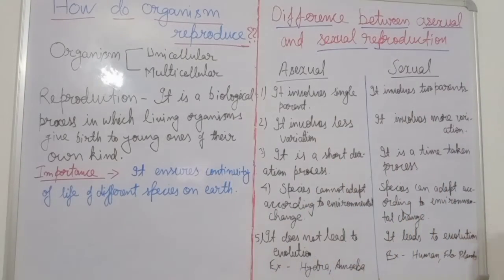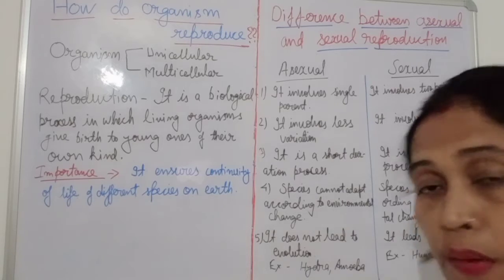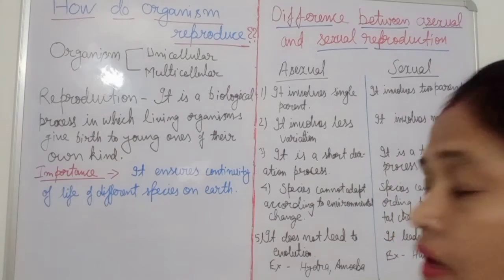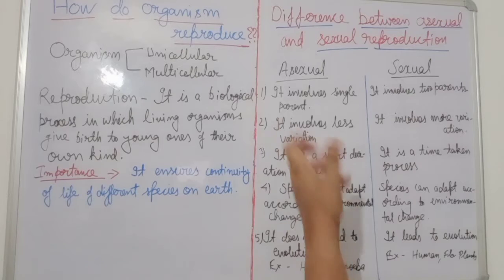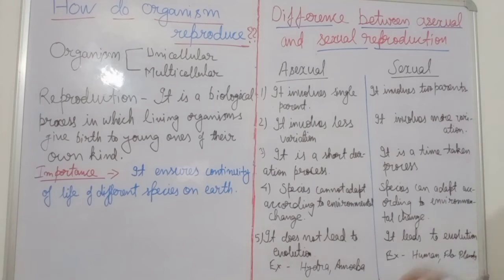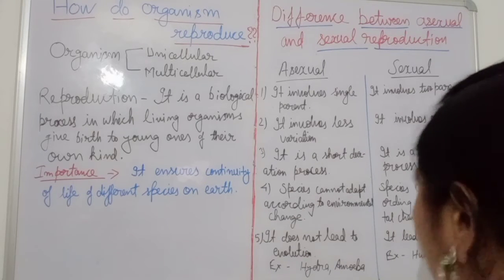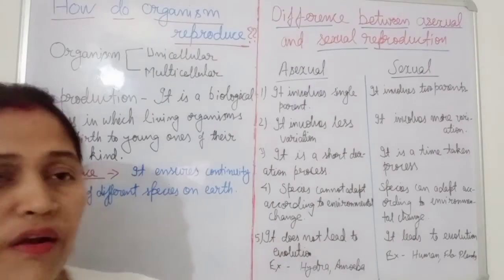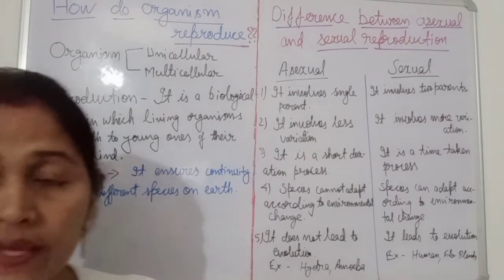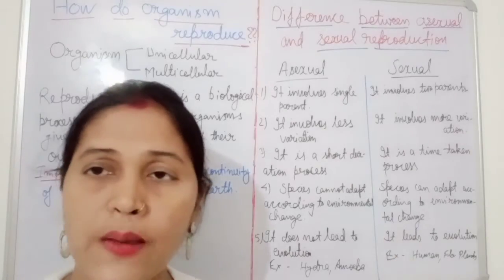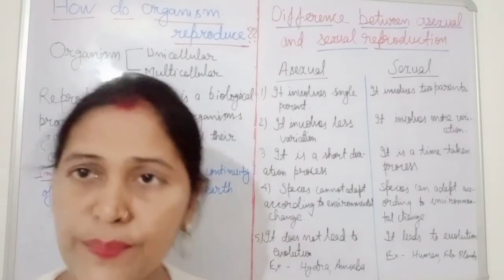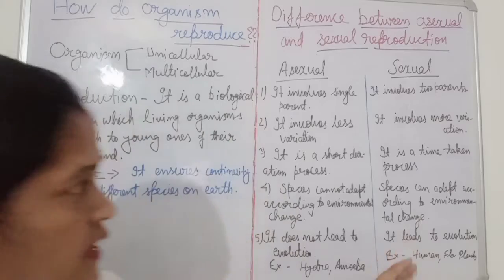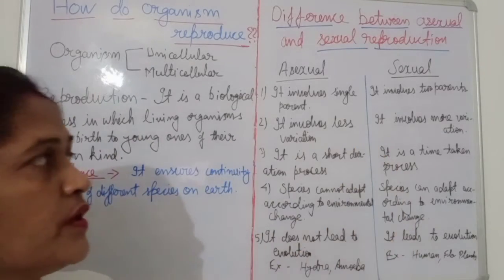Examples of asexual reproduction are Hydra and Amoeba. Examples of sexual reproduction are humans — the best example — and flowering plants. In the case of flowering plants, sexual reproduction occurs.